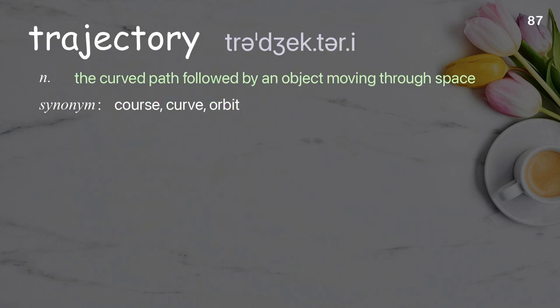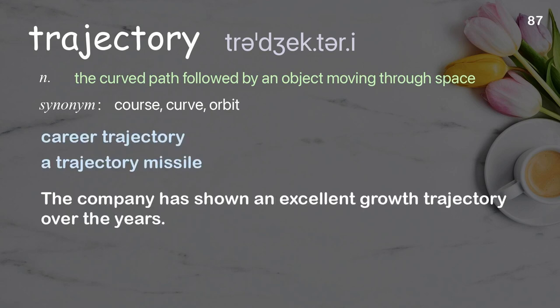Trajectory: the curved path followed by an object moving through space. Examples: career trajectory, a trajectory missile. The company has shown an excellent growth trajectory over the years.